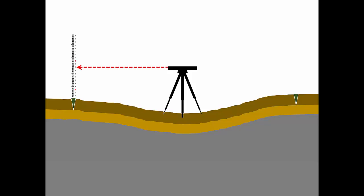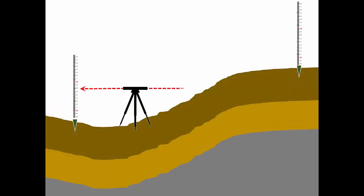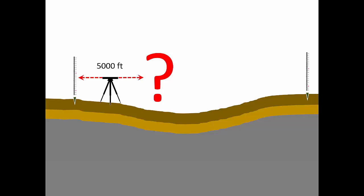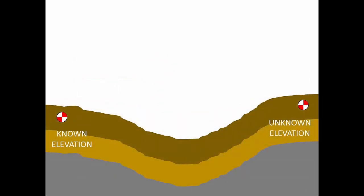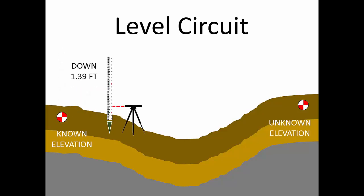If I need to find the rise between two locations 500 feet apart, I simply set up halfway between the points and take two readings. But what if I can't see between those points? For instance, in this scenario the elevation difference is greater than the height of my tripod, or what if the locations are 5,000 feet apart? To overcome these obstacles, we perform a level circuit — measuring a series of elevation differences end-to-end.